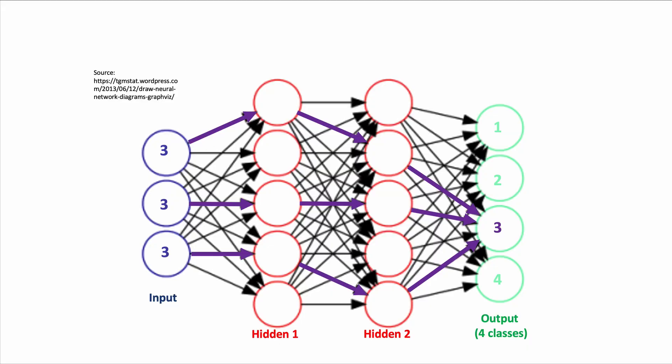Prediction is fairly simple. You input a value and you follow the different weights of that neural network, and you come to hopefully the right conclusion — which in our case would be the number three.